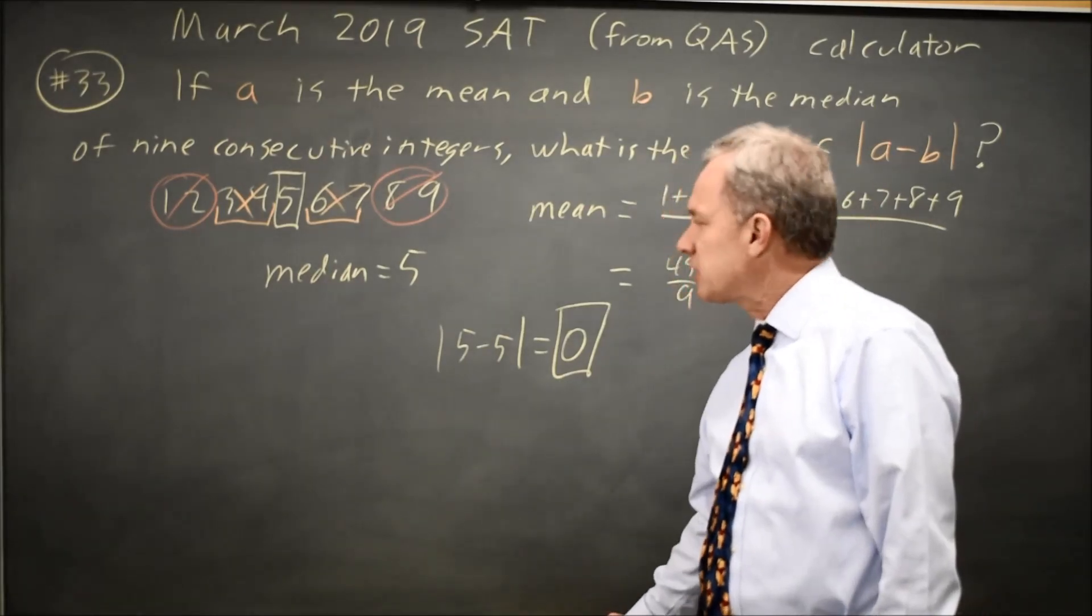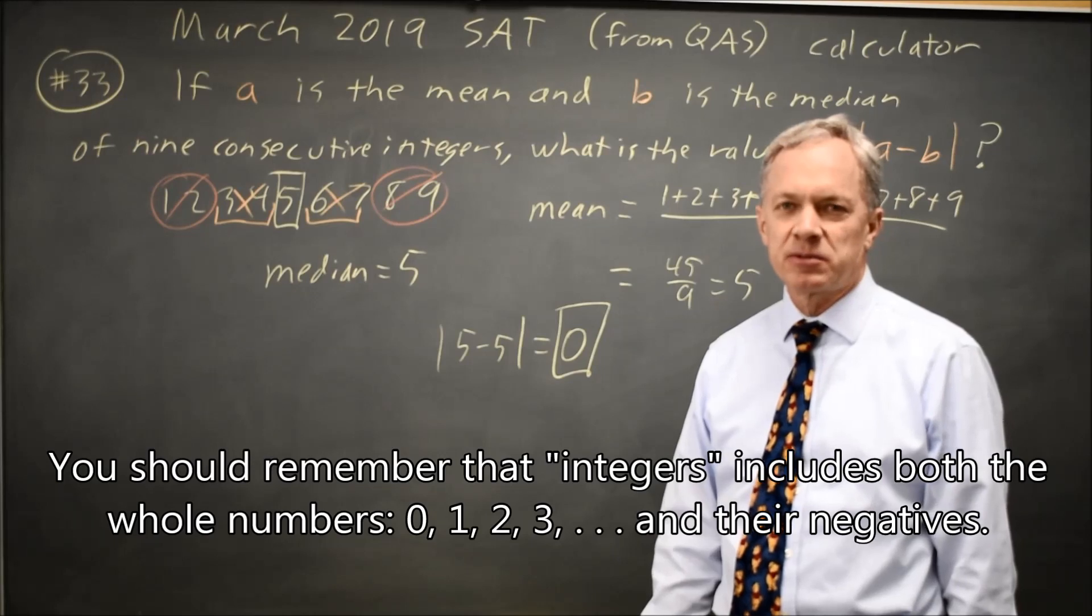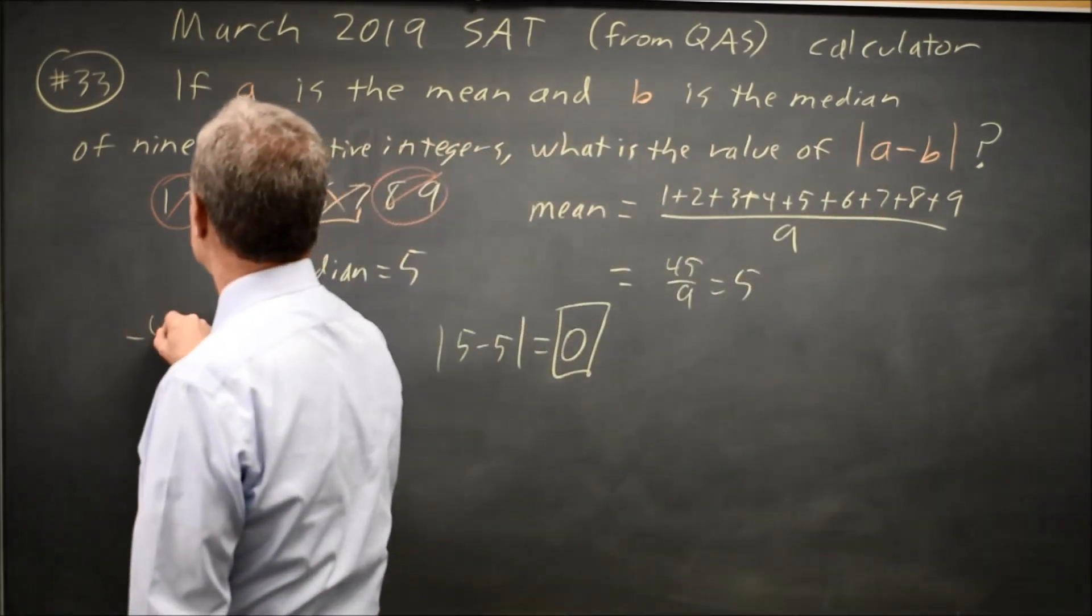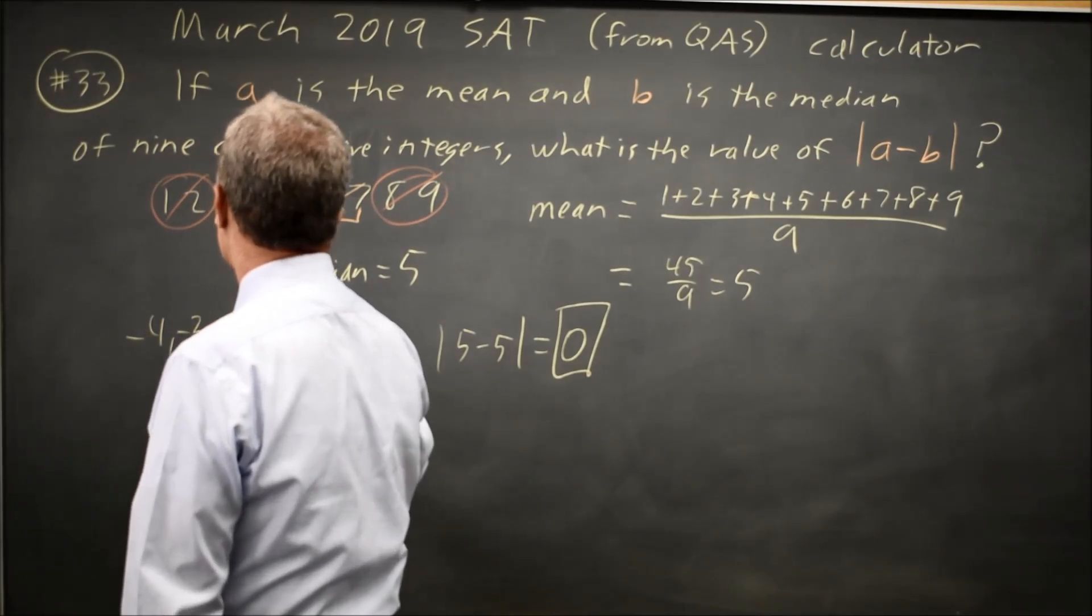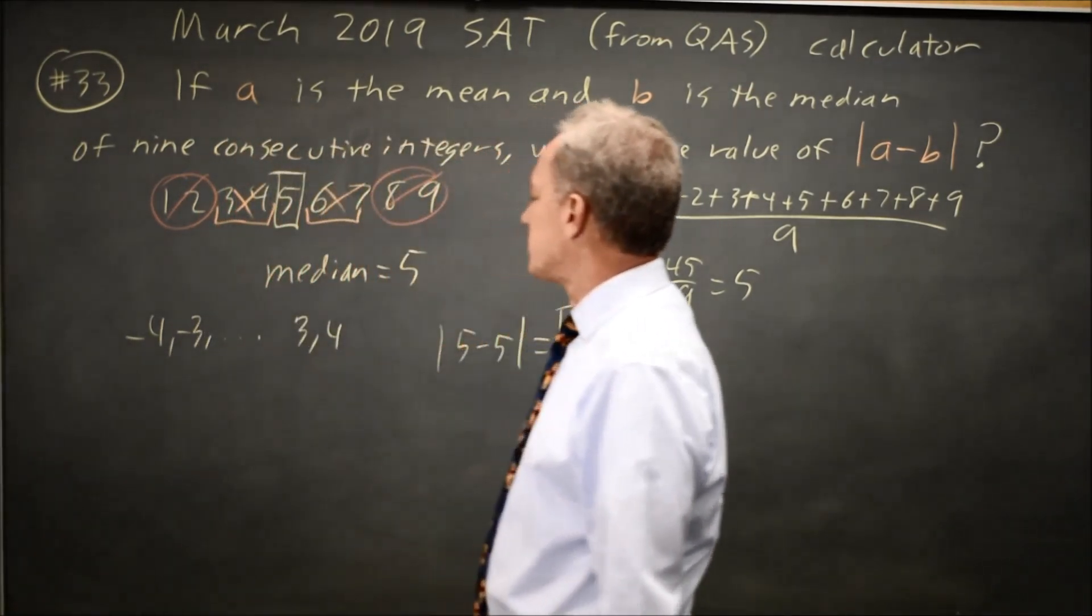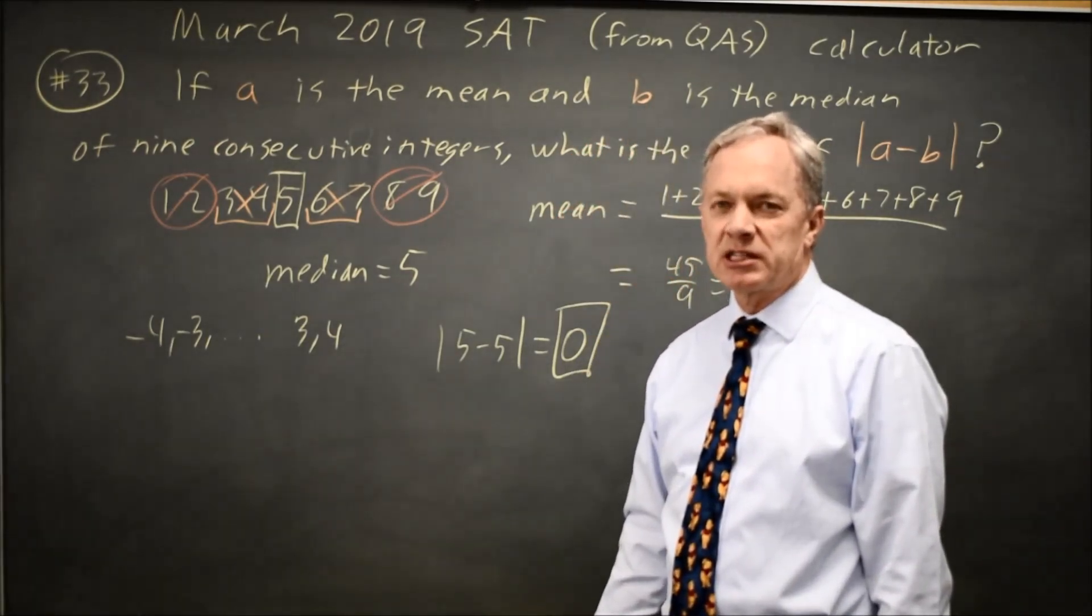But a lot of us are uneasy about integers. Integers are whole numbers or their negatives. And so I could have used negative four through positive four, where it's more obvious that the middle number is zero and the mean. Add them up, you get zero, divide by nine, and it's still zero.